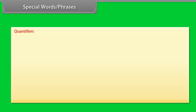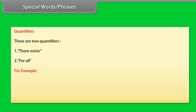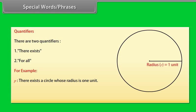Quantifiers: There are two quantifiers — (1) there exists, and (2) for all. For example, P: 'There exists a circle whose radius is one unit.' This means that there is at least one circle whose radius is one unit.